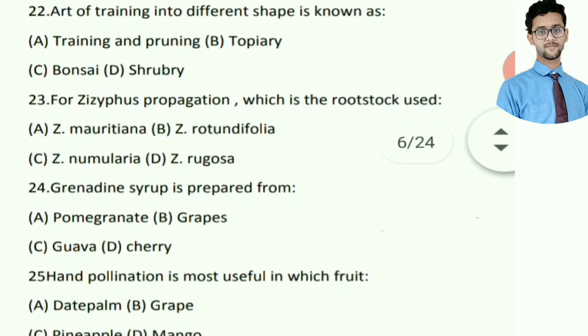The art of training plants into different shapes is known as — very simple — topiary, option B. The largest topiary in the world is in Manipur, which is 18 feet tall.